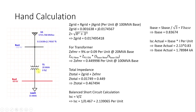Because a transformer is involved, we use per-unit calculation. These values are already in per unit at a 100 MVA base. Dividing the percentage values by 100: R_grid = 0.00116 pu and jX_grid = j0.0174 pu. Using Z = √(R² + X²), Z_grid = √(0.00116² + 0.0174²) = 0.017495 pu at 100 MVA base.